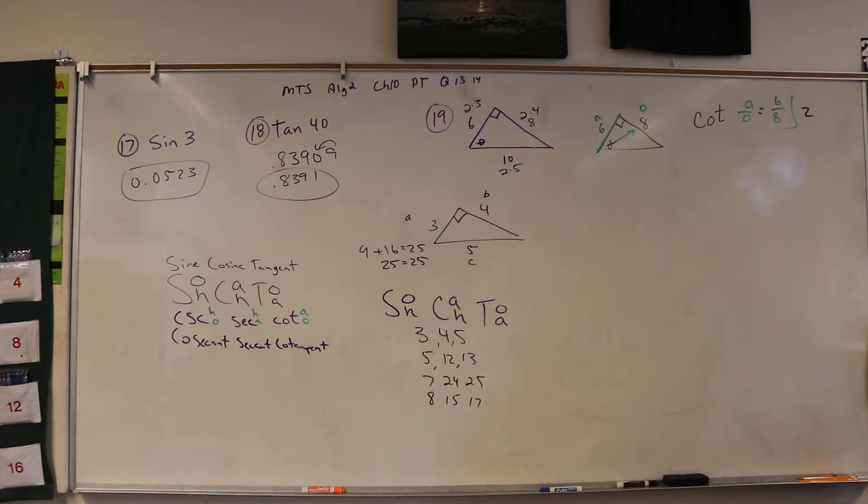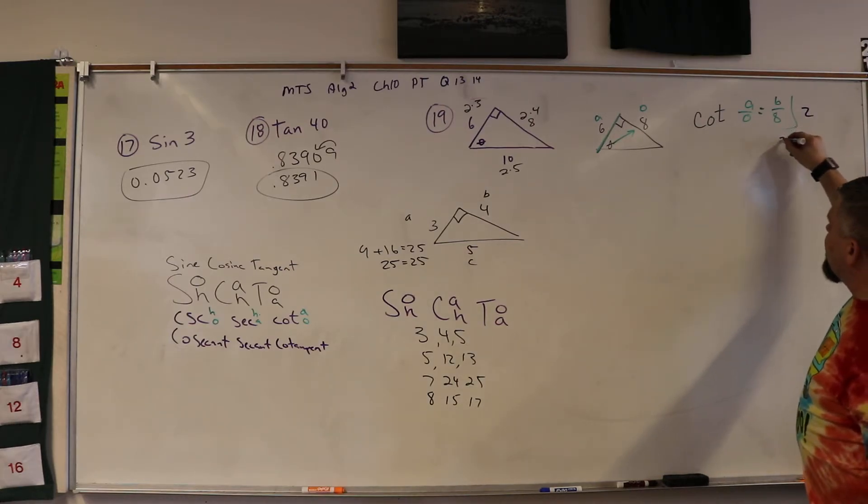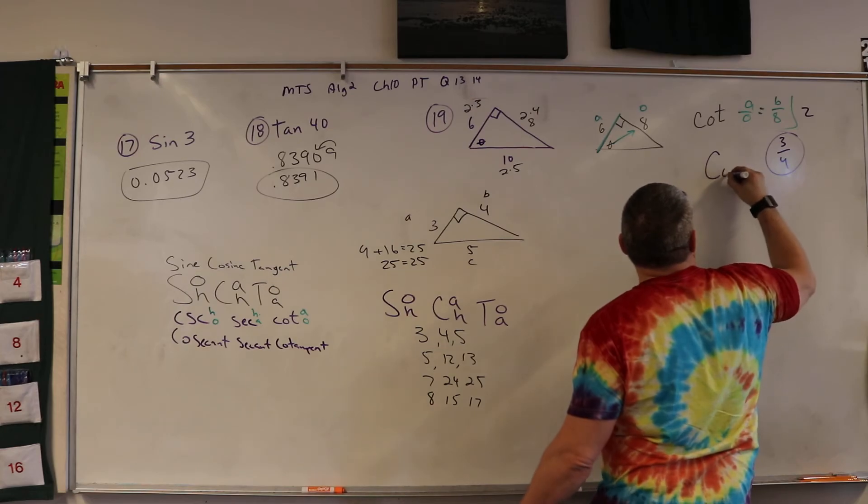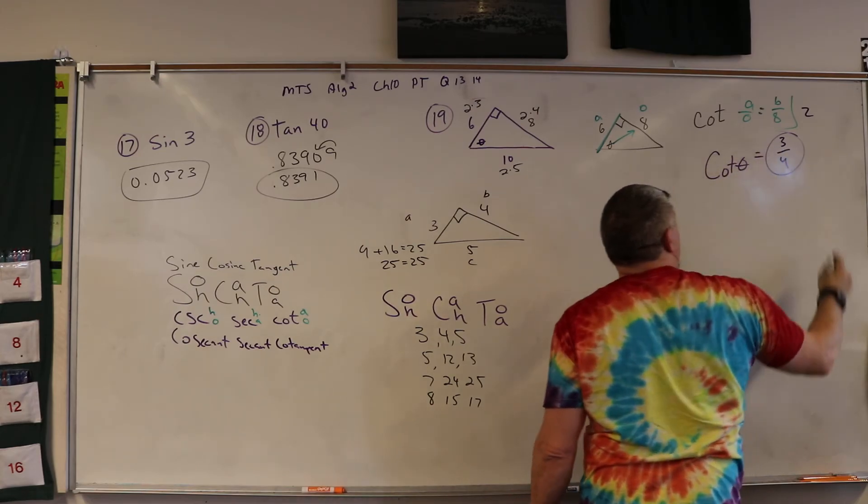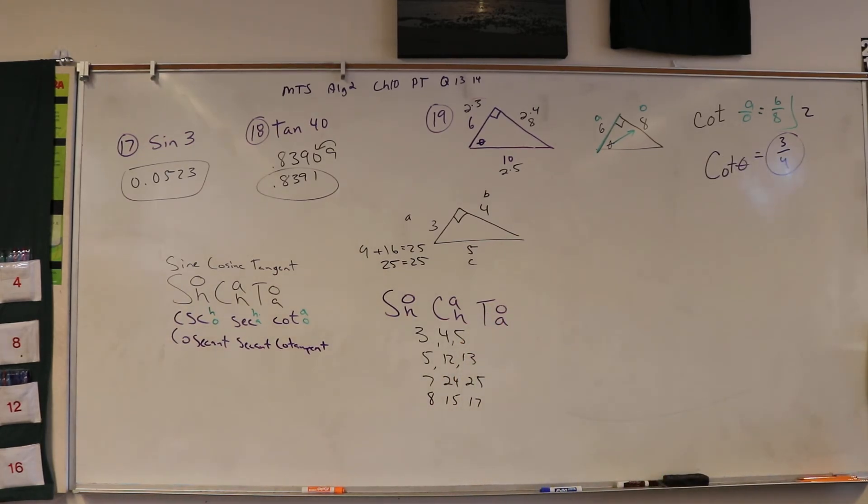2. How many times? 3 and 4. Boom. So the cotangent of theta is equal to 3/4. Is that okay? What if you guys just pay attention?